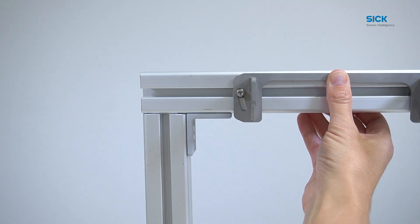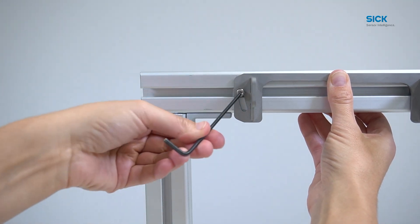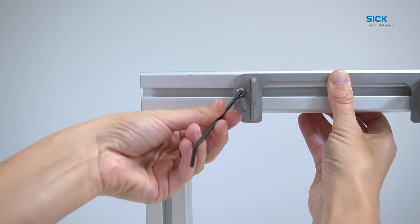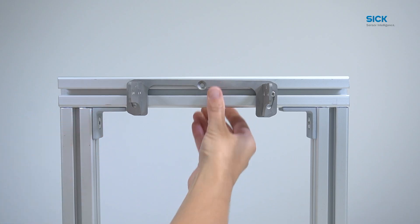Only the outer mounting holes are used for this. These holes are designed as elongated holes to adjust the horizontal mounting. The screws should therefore not be tightened tightly in this step so that the alignment can be adjusted later.